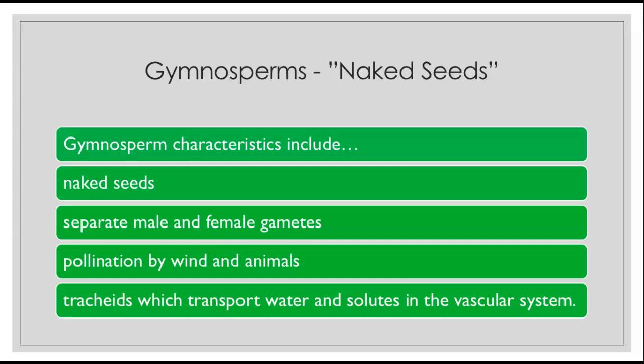Gymnosperm characteristics include naked seeds that are open to the environment, separate male and female gametes, pollination by wind and animals, and structures called tracheids which transport water and solutes in the vascular system.